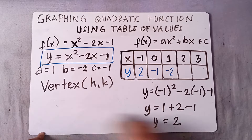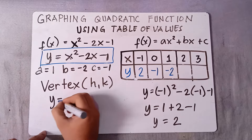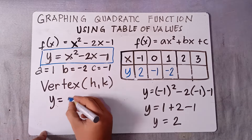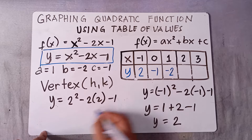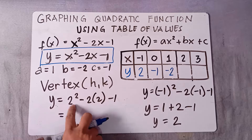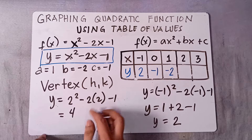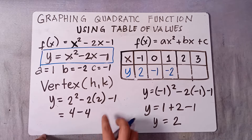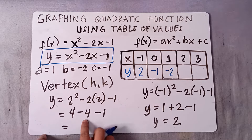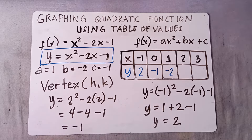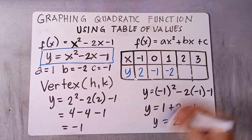Next, substitute x = 2: y = 2² - 2(2) - 1 = 4 - 4 - 1 = -1. So if our x is 2, our y is negative 1.